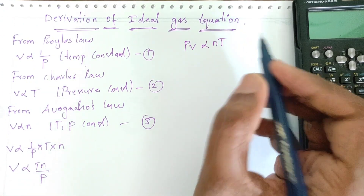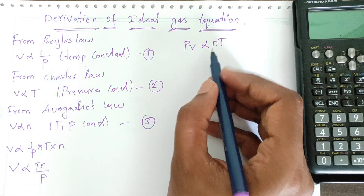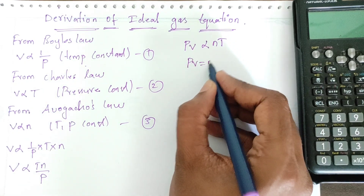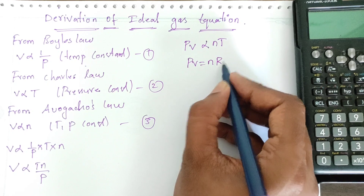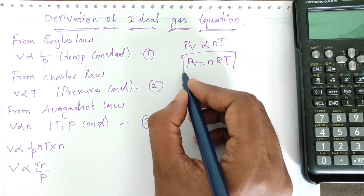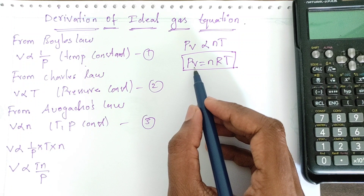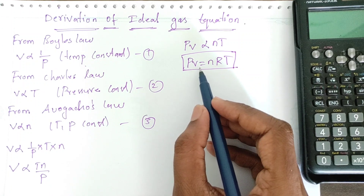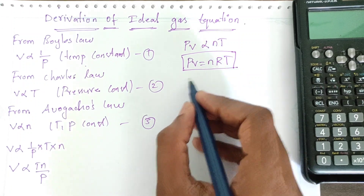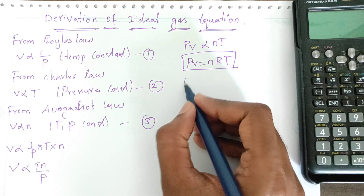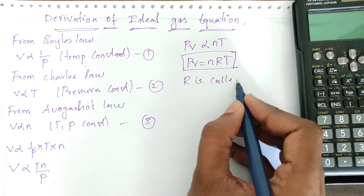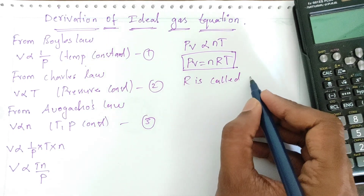To remove the proportionality, we add a constant: PV = NRT. This is the ideal gas equation, where P is pressure, V is volume, N is number of moles, T is absolute temperature, and R is called the universal gas constant.